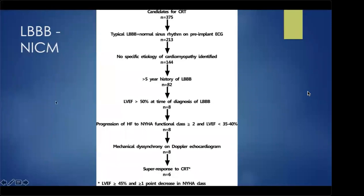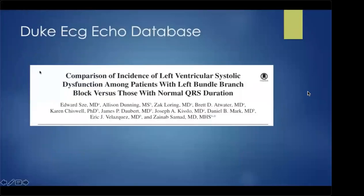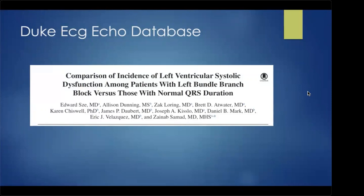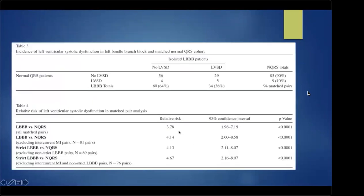This strongly suggests that left bundle on its own is a cause of non-ischemic cardiomyopathy. At Duke, we looked at all patients with isolated left bundle branch block — left bundle with no other cardiac comorbidities and a normal EF — matched to a narrow QRS population with identical comorbidities, all requiring a follow-up echo at least six months later. Those with left bundle were 3.78 times more likely to develop cardiomyopathy. When we used a very strict definition of LBBB, the relationship got even stronger.